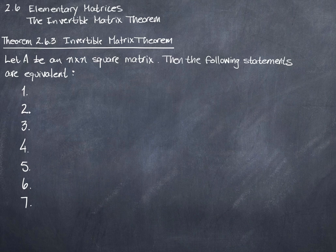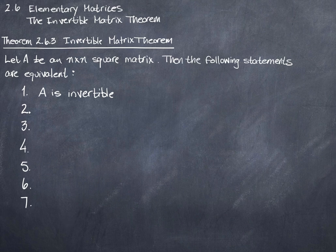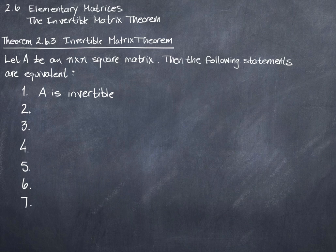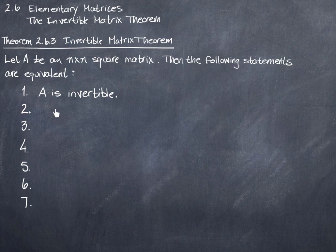So let's go over what those seven statements are. The first statement is A is invertible. So we have A as an n by n square matrix, and if A is invertible, all of these are also true. We don't know what they are yet, but the key point is: assuming A is square and one of these conditions is true, then the others are also true. The first of these statements is that A is invertible.